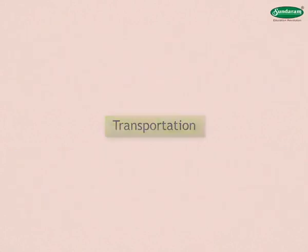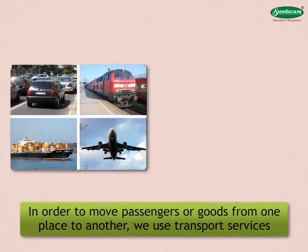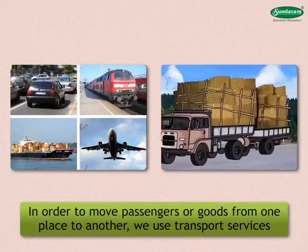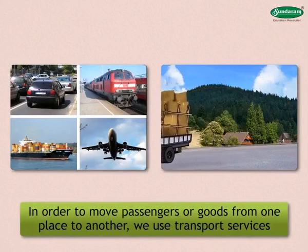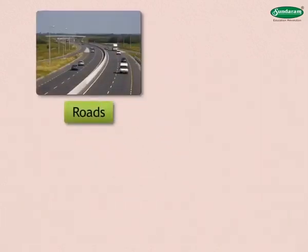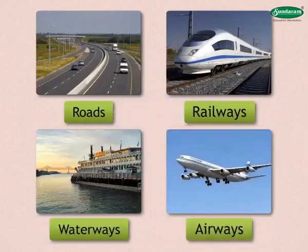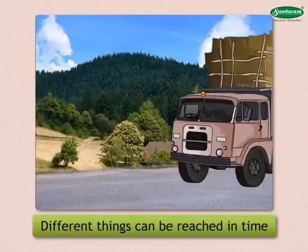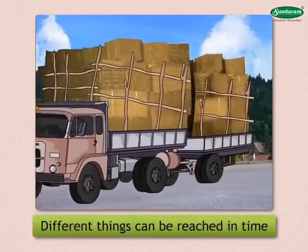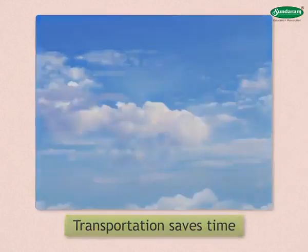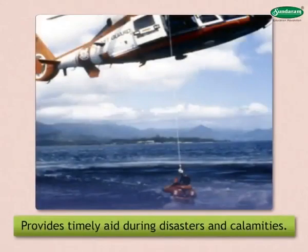Transportation. In order to move passengers or goods from one place to another, we use transport services. For this, facilities like roads, railways, waterways and airways are used. Due to this service, different things can be reached in time at the place where they are required. Transportation saves time and helps in providing timely aid to people during disasters and calamities.